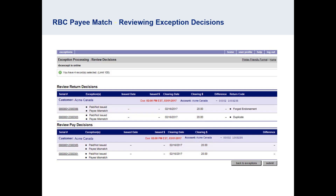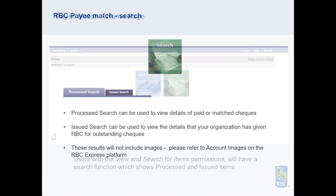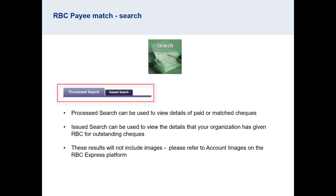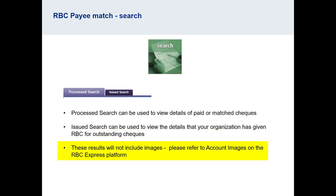If your administrator has given you permissions to use the search feature, you will also see the green search box on the Payee Match home screen. The search feature has two tabs. Processed search can be used to view the details of paid or matched checks. Issued search can be used to view the details of outstanding items — the issued item details that your organization has sent to RBC. These results will not include images; however, you can refer to the Account Images service within RBC Express.